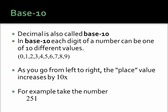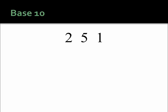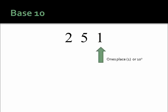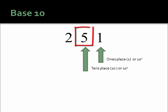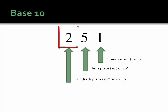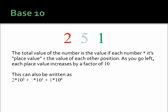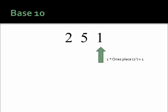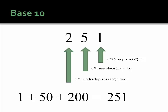For example, take the number 251. The one is in the ones place, or one times ten to the zeroth. The five is in the tens place, or five times ten to the first power, which is 50. The two is in the hundreds place, so it holds the value of 200, or two times ten to the second power. The total value of 251 is the addition of the value of each place: one plus 50 plus 200 gives you 251.